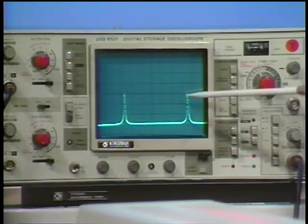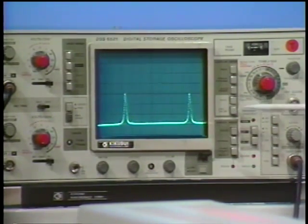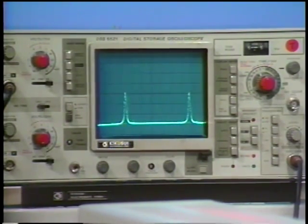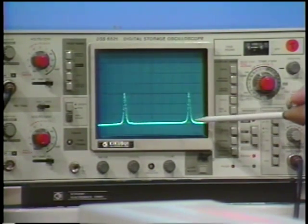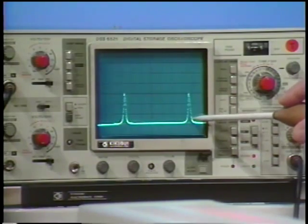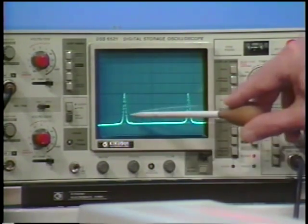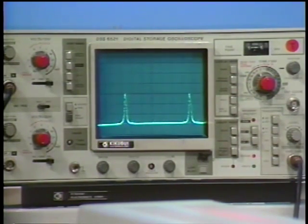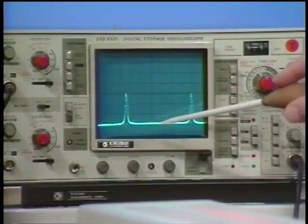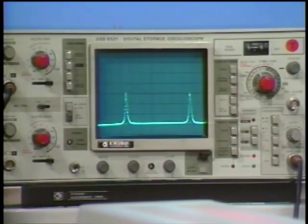Another interesting thing that you want to observe is the quality factor, the so-called finesse of the cavity. The finesse of the cavity is defined as the free spectral range, which is the separation between these two resonances, divided by the width of the resonance. In this case, the finesse is about 30, or sometimes I can adjust it to about 50 or so, because my mirrors have 95% reflectivity.